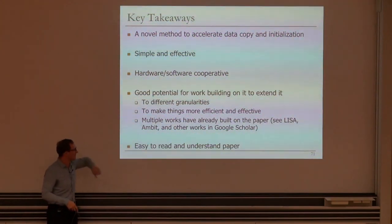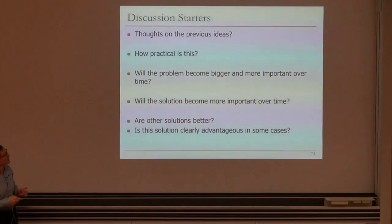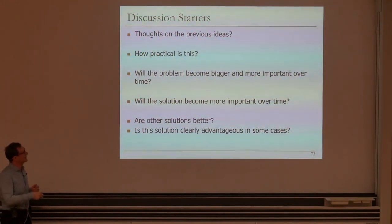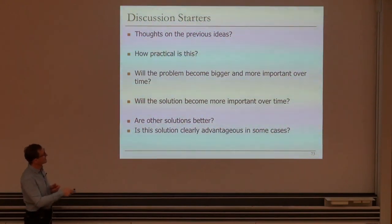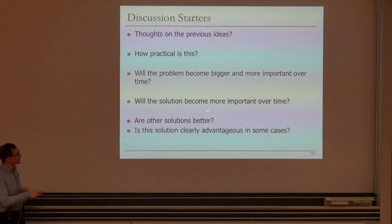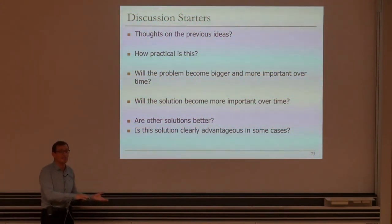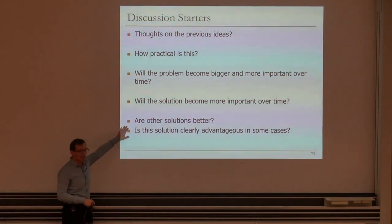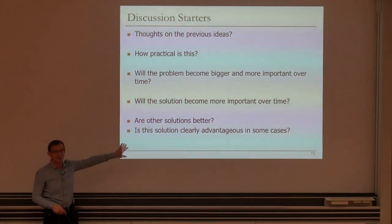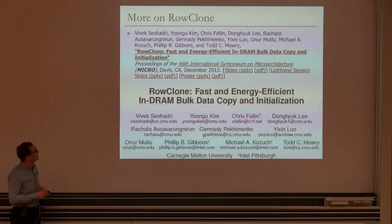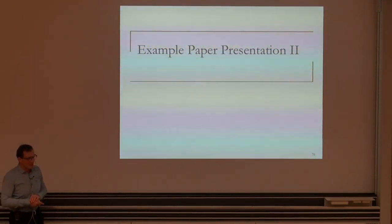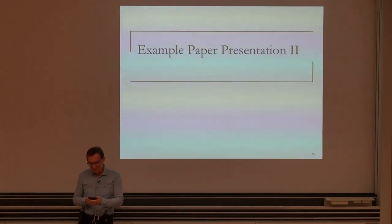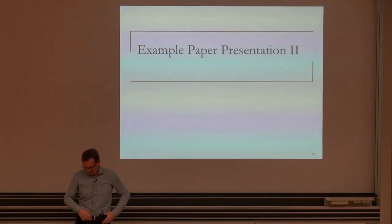Takeaways: Row Clone is a novel method to accelerate data copy and initialization — simple, effective, and hardware-software cooperative. Good potential for follow-on work extending it to different granularities and addressing cache coherence. Multiple works have already built on the paper — LISA, Ambit, and many others. Hopefully the papers you're assigned are also easy to understand and build on. Okay, let's take a 15-minute break until 4:20, and then we'll continue.